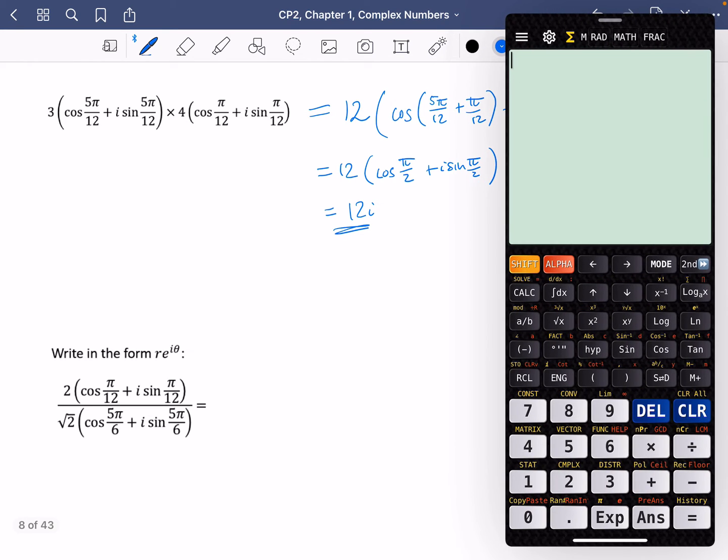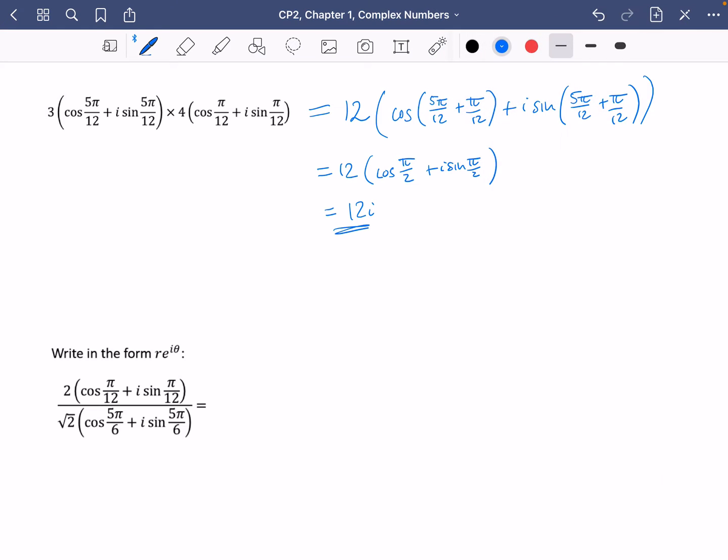I'll just quickly show you that, though. You should know this, that sine of pi over 2 is obviously 1, and cos pi over 2 is 0. Hence, it's coming up with 12 i here.